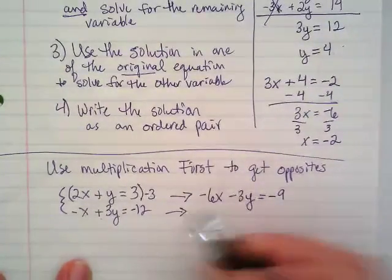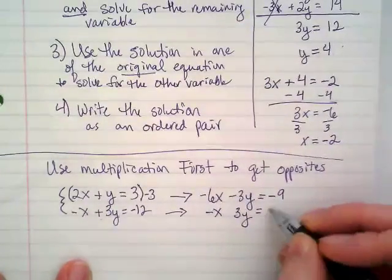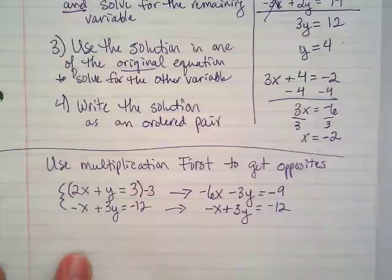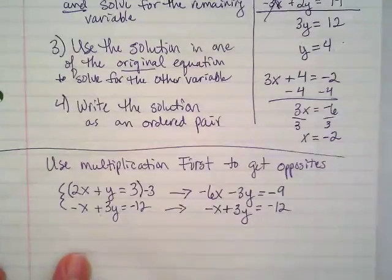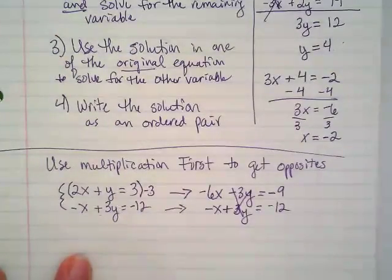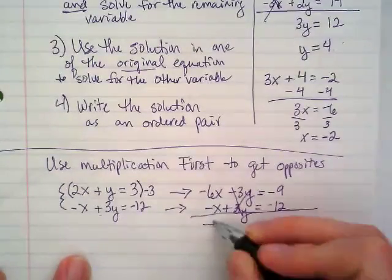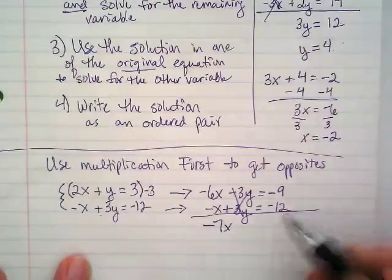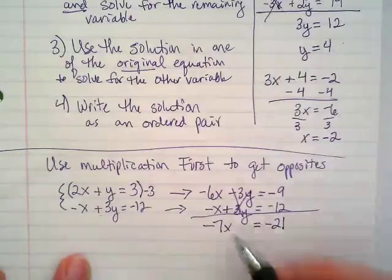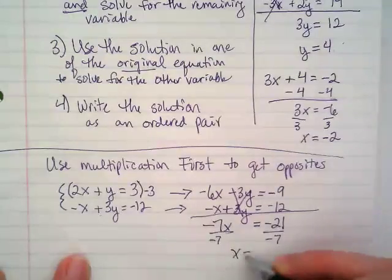This equation is staying as it is. We don't need to change it. Where are my opposites? It's the y term this time. And I can cross that out. And then I'm going to combine everything else that's in there. Negative 6x and negative x would give us negative 7x. Negative 9 and negative 12. Negative 21. If I divide everything by negative 7, x equals 3.